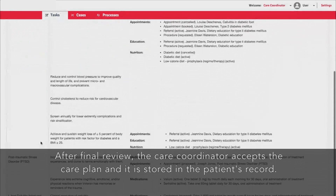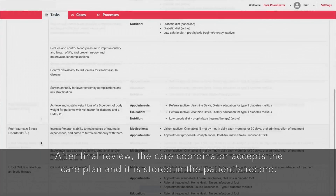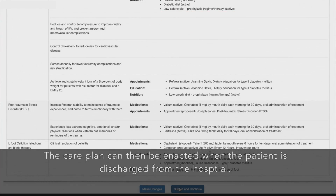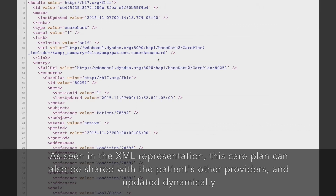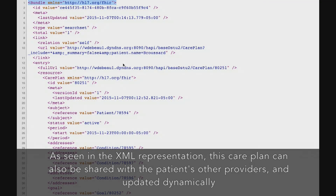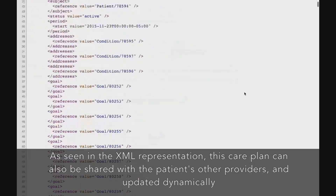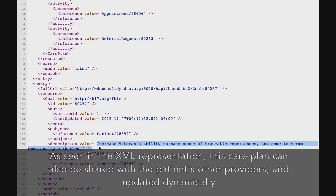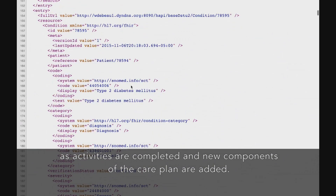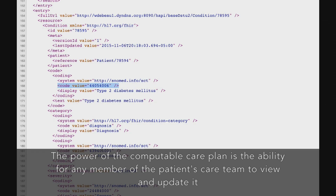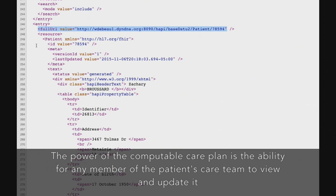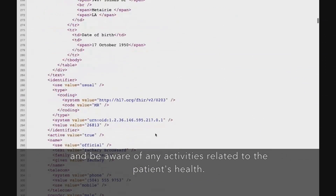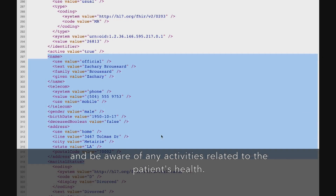After final review, the care coordinator accepts the care plan and it's stored in the patient's record. The care plan can then be enacted when the patient is discharged from the hospital. As seen in the XML representation, this care plan can also be shared with the patient's other providers and updated dynamically as activities are completed and new components of the care plan are added. The power of the computable care plan is the ability for any member of the patient's care team to view and update it and be aware of any activities related to the patient's health.